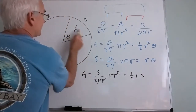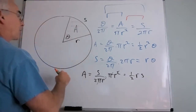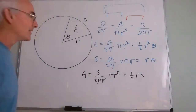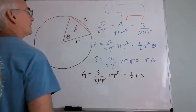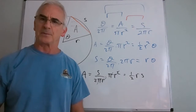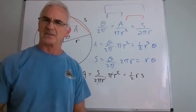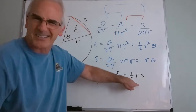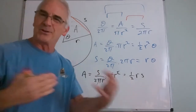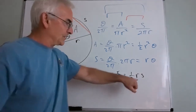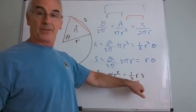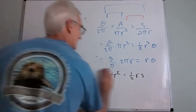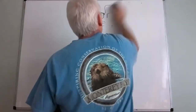Now the most obscure: putting the area and arc length ratios together gives A/s = πr²/(2πr), so A = (s/(2πr))·πr² = (1/2)rs. The area of a sector is one-half times radius times arc length. It's analogous to one-half base times height for a triangle — r is like the height and s is like the base.